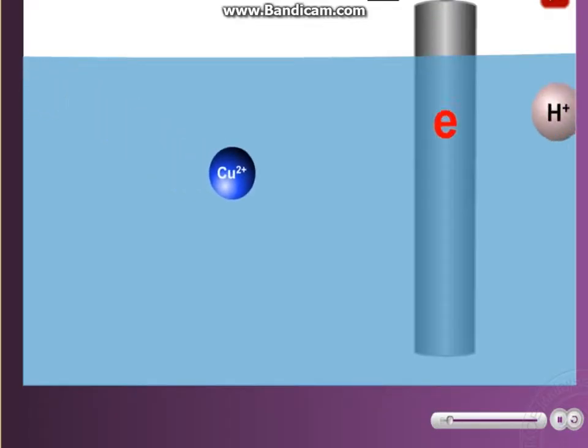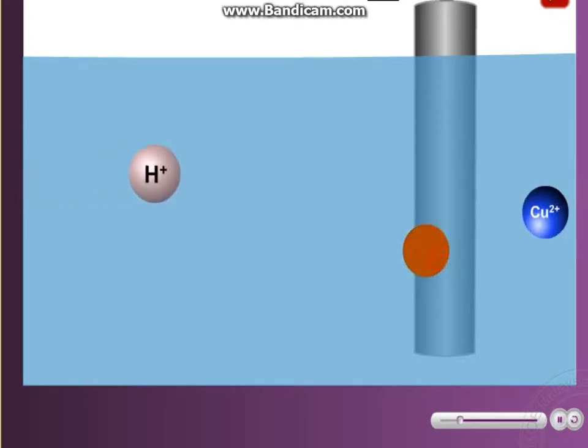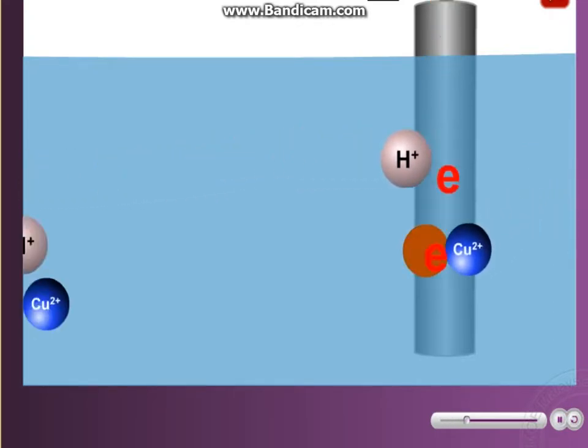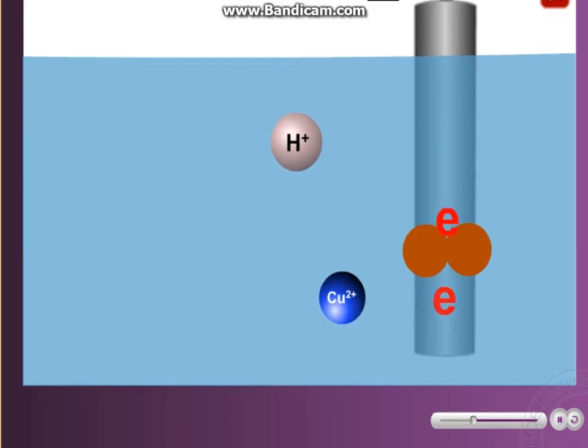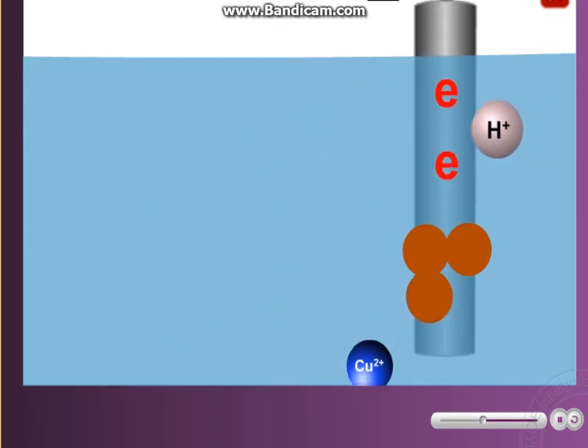Now, let's take a look at the cathode. There are two ions attracted to the cathode: copper-2 ions and hydrogen ions. Only one will be discharged.